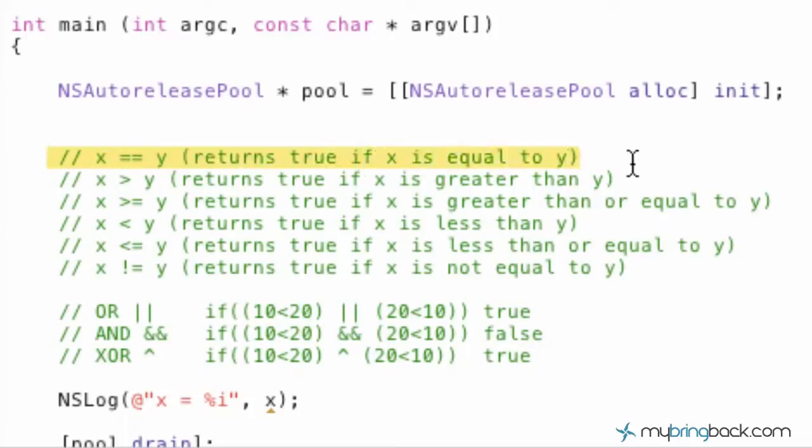not equal to another value and then it returns either true or false in that regard. So, let's start at the top. This is kind of, these are going to be some of your basic operators, comparison operators.